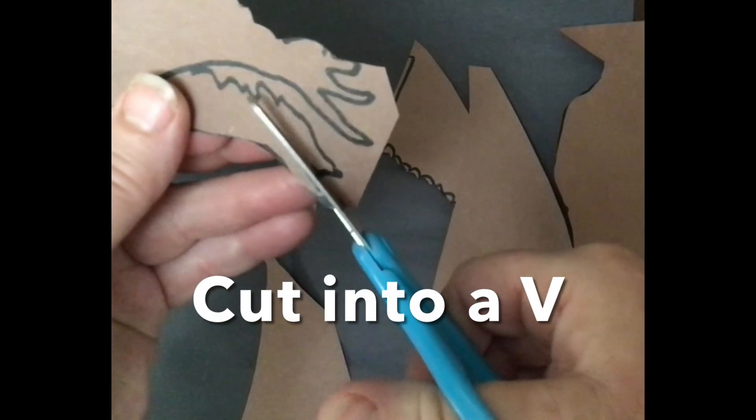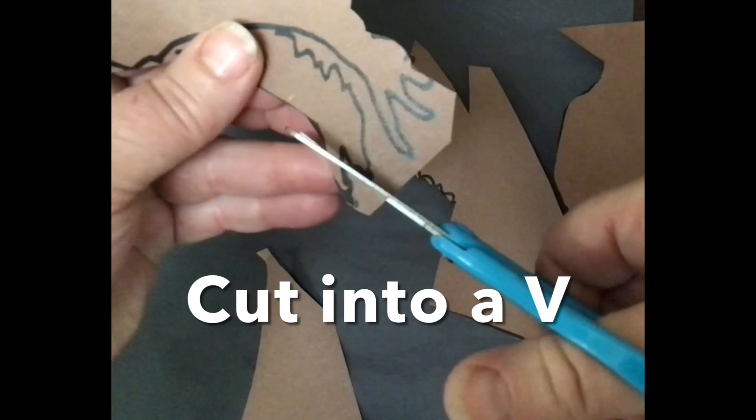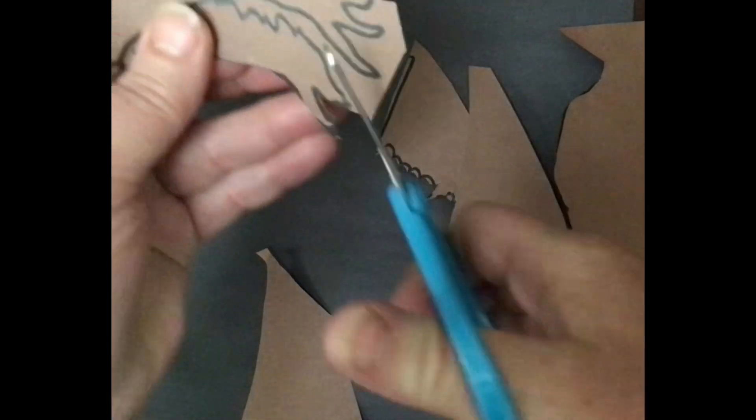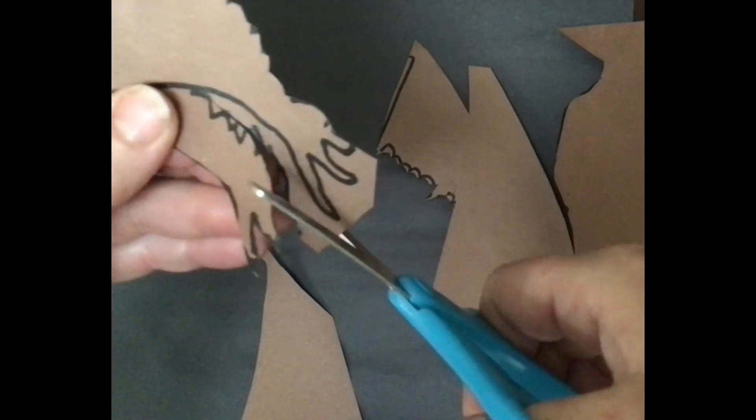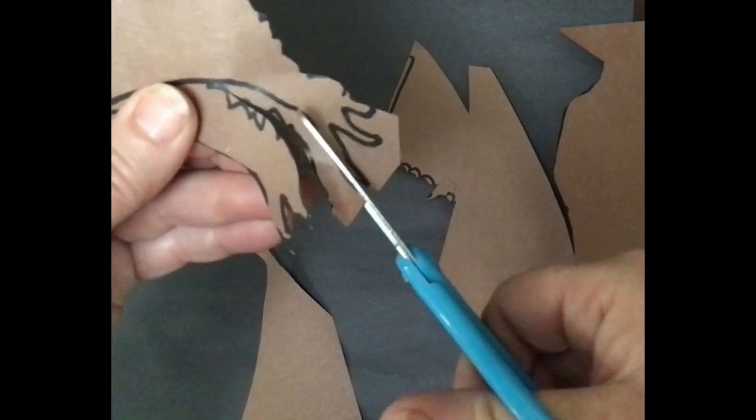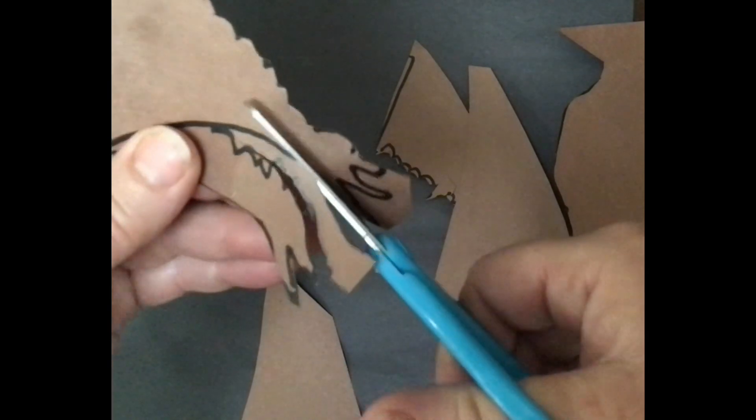This is interesting. I'm going to cut in and I'm going to cut again. Oh, be careful of your fingers. Know where your fingers are when you go into this V area. This is the best way to cut out this type of shape—go inwards.